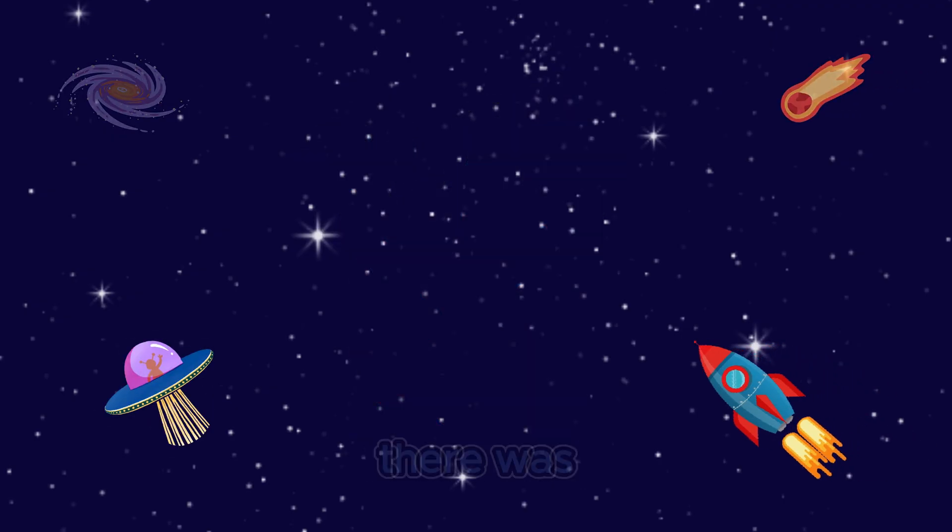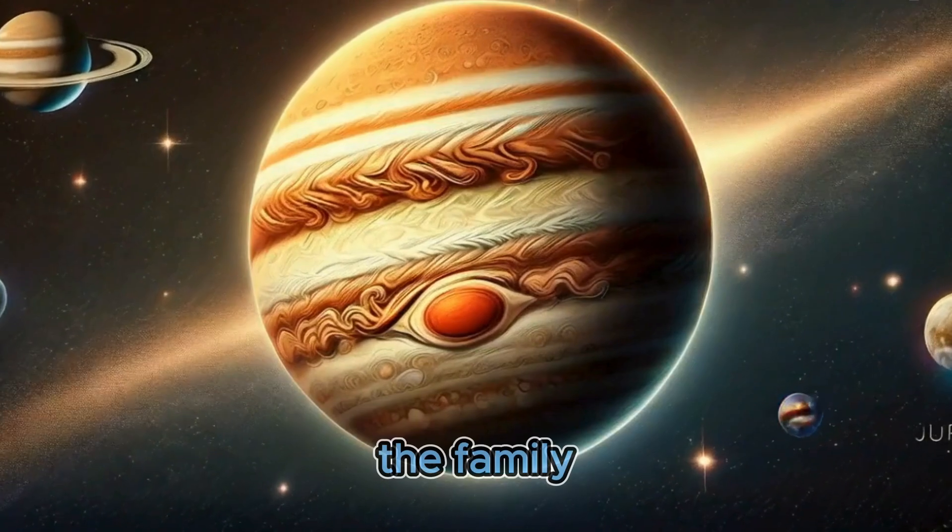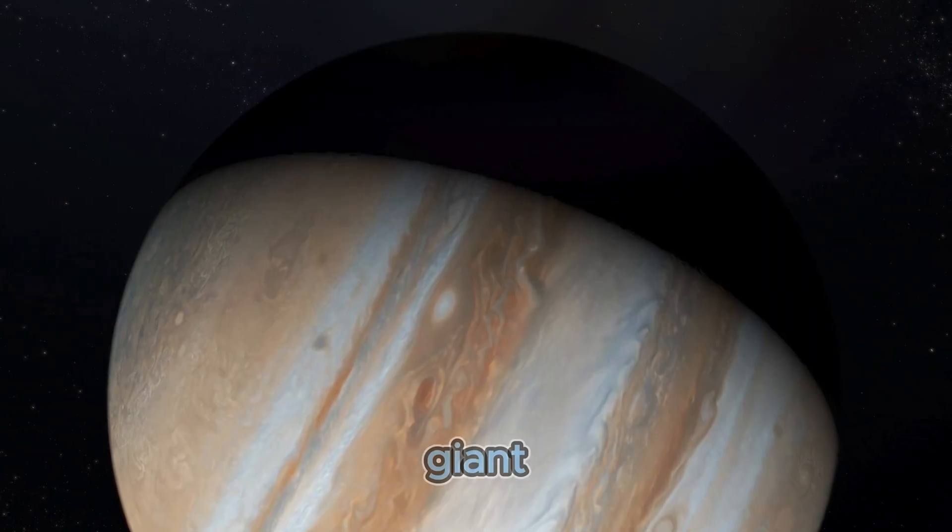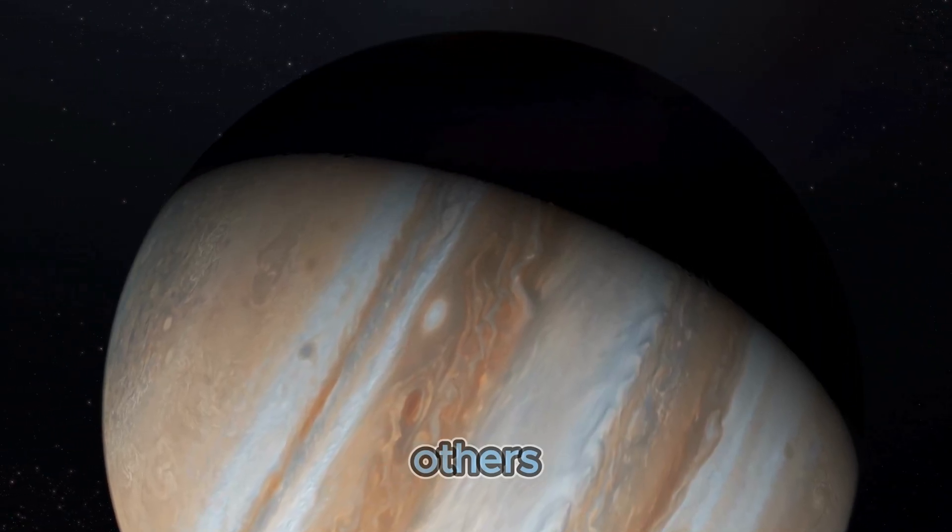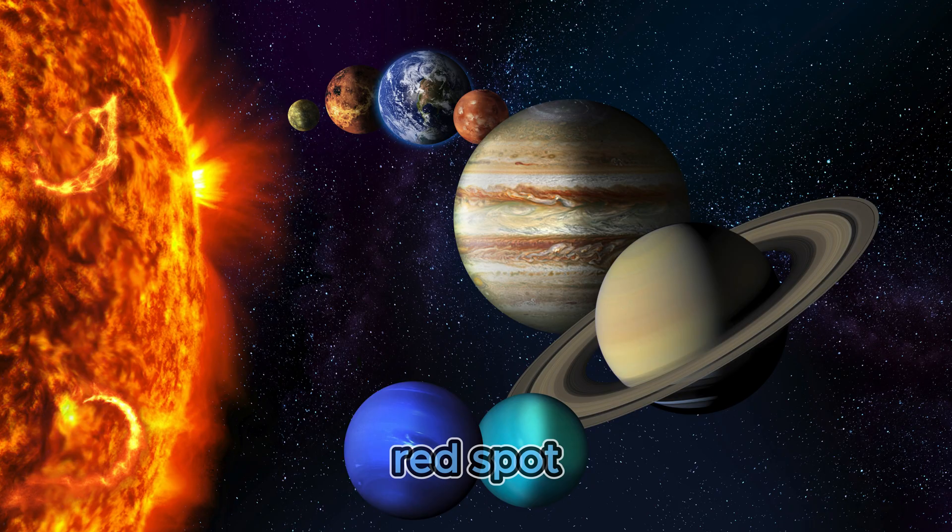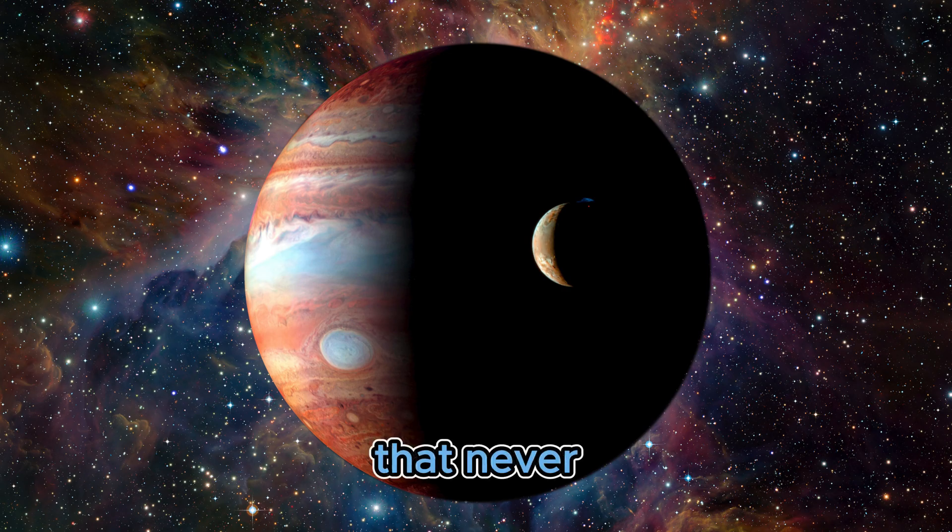Further away, there was Jupiter, the biggest planet in the family. Jupiter was like a giant, always looking after the others. It had a big, red spot, like a giant eye that never closed.